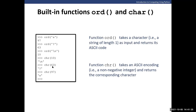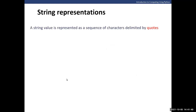If we would like to do the reverse — take the ASCII encoding and return the corresponding letter or character — we use the function `chr`. For example, `chr(97)` is going to give you the letter 'a'.